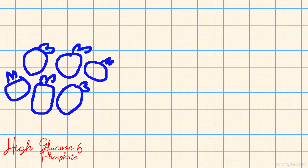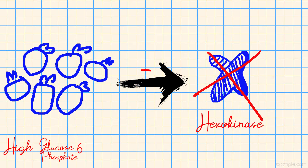The regulation of glycolysis via hexokinase within the liver is similar to that which occurs within the muscle. This means when there is an abundance of glucose 6-phosphate, it acts as a negative feedback loop and inhibits the activity of hexokinase, therefore preventing the conversion of glucose to glucose 6-phosphate and inhibiting the flow of glycolysis.